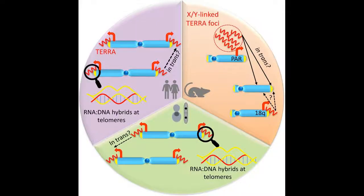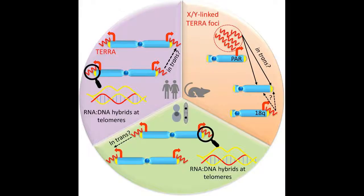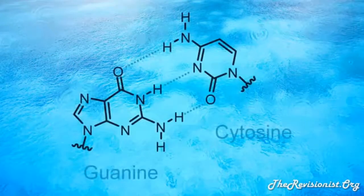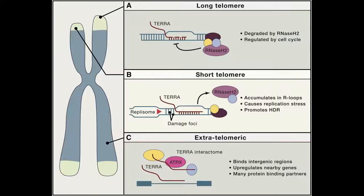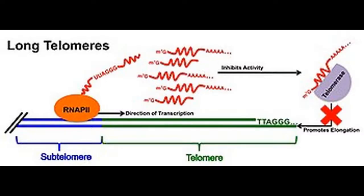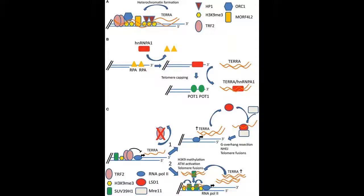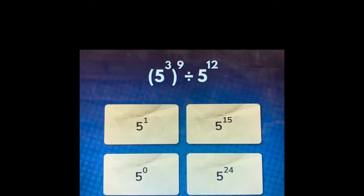Since evidence has shown that TERRA expression is regulated in a telomere length-dependent manner, it is believed that TERRA may play an important role along with telomerase to modulate the length of telomere repeats on chromosome ends. Generally, cells with long telomeres exhibit greater TERRA expression while short telomeres have relatively lower TERRA expression. The complementary base pairing of the TERRA transcript may work to compete with telomerase's DNA substrate when TERRA expression is at its highest, preventing telomerase from further lengthening telomeres.